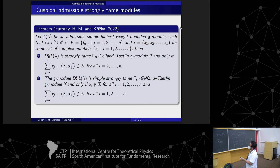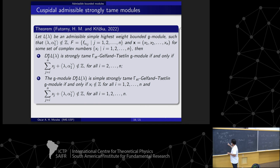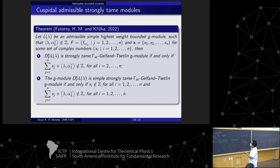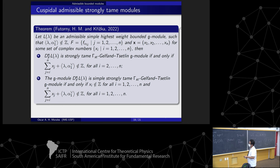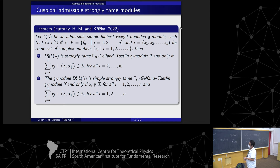Consider this set f and x = {x_1, x_2, ..., x_n} the set of complex numbers. Then this twisted localization is strongly tamed if and only if this condition is true. We need this condition. In particular, this module is simple and strongly tamed.